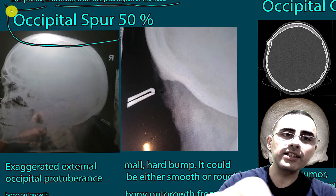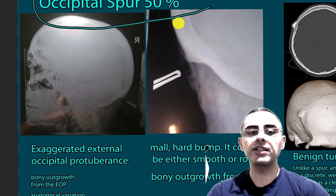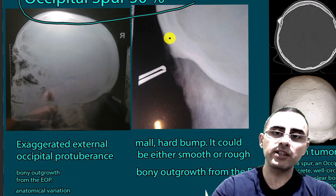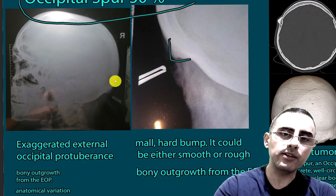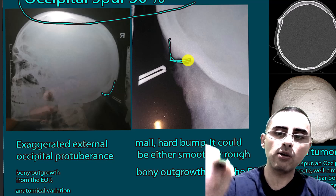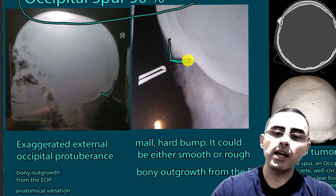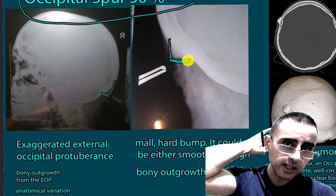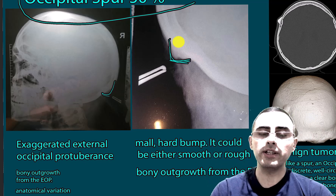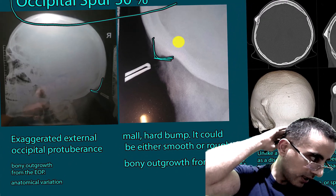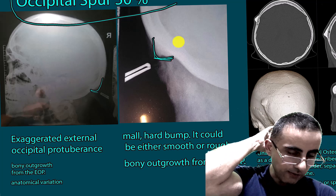The most common cause is occipital spur, which is an exaggerated external occipital protuberance. As you can see here, it is a protruding overgrowth part of the bone. When you palpate it, you can feel it — it can be rough or smooth. It is usually located on the midline.